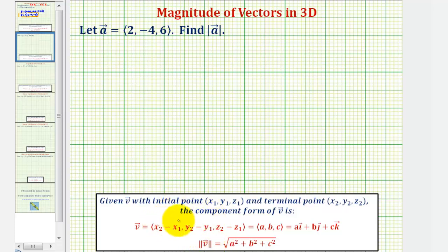When we have a vector in component form, or this form here, to find the magnitude or length we use this formula here, which is just an extension of the distance formula that we used in two dimensions.